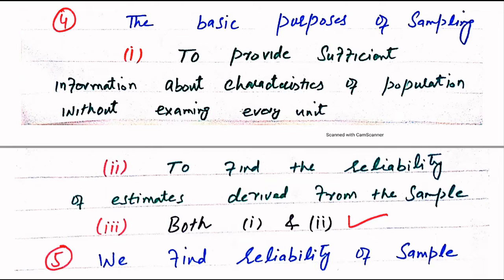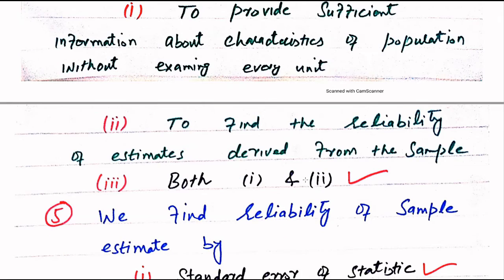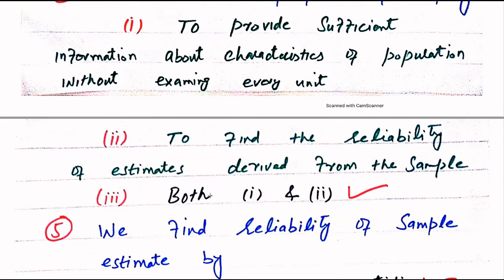Question number 4. The basic purpose of sampling is: 1) to provide sufficient information about characteristics of population without examining every unit, 2) to find the reliability of estimates derived from sample, 3) Both 1 and 2. The right answer is Both 1 and 2.